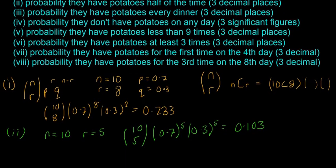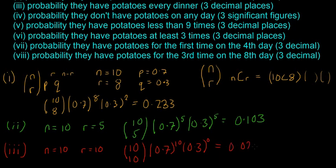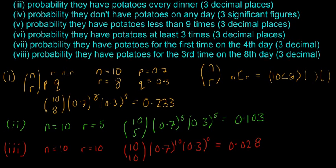The next part then, they're asking the probability they have potatoes every dinner. So in this case n is equal to 10 still, and r is also equal to 10. So it's a success every single time, they have potatoes every single dinner. So it's 10 choose 10, 0.7 to the power of 10, and in this case it's 0.3 to the power of zero. So in this case the probability is going to be 0.028. So not that high of a probability that they will have potatoes every single day. So one thing you'll see with Bernoulli trials is you do get quite awkward answers. There's going to be lots of decimal places and don't worry, that's just the way it is.